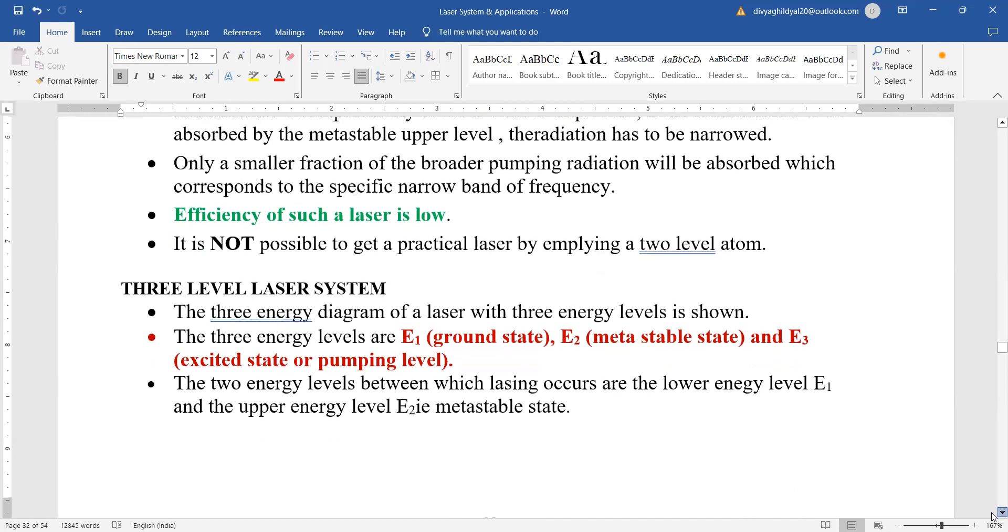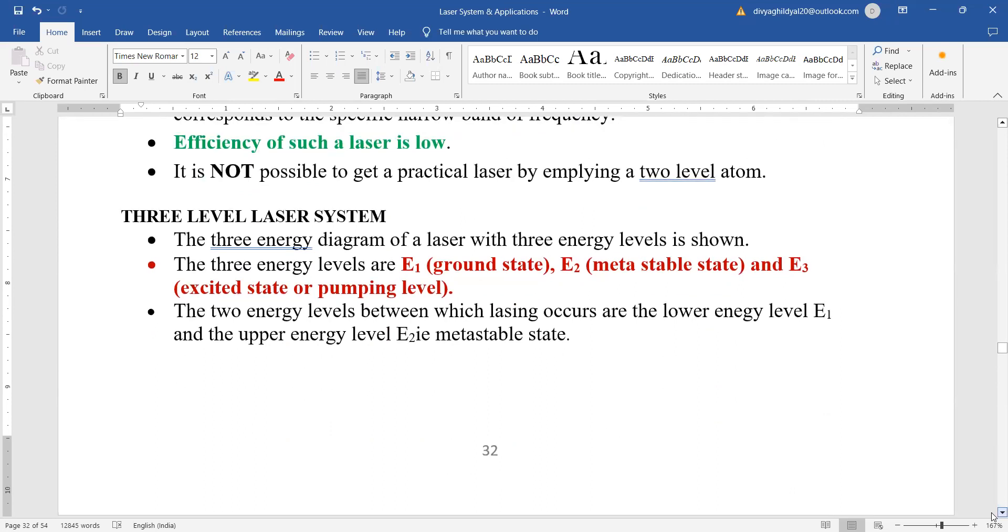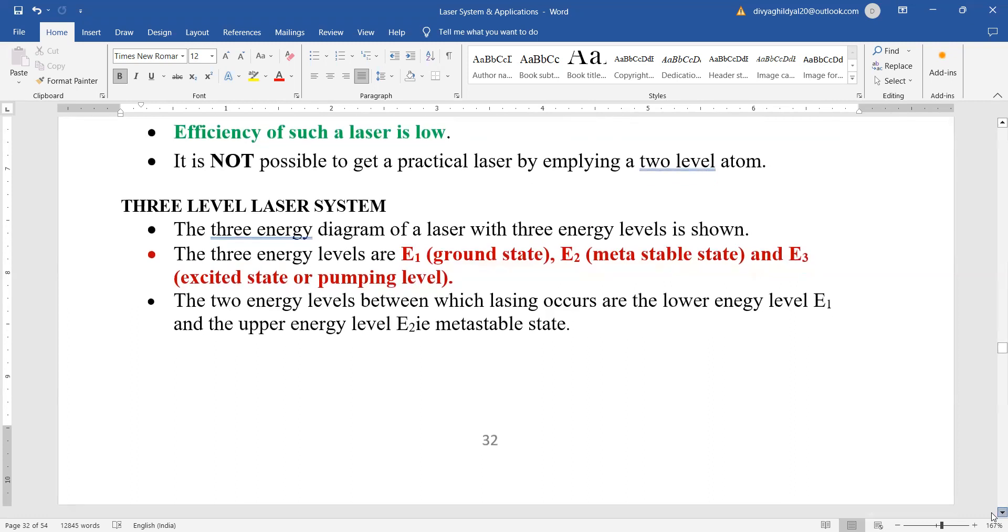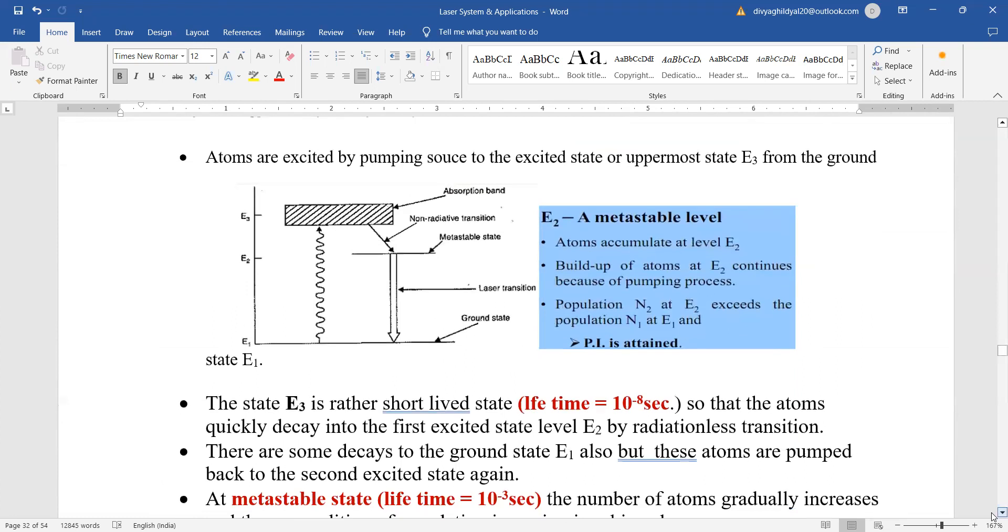Three level laser system. For three level you can remember your ruby laser and answer the questions that the three level energies are ground state, metastable state and excited state or the pumping level. Now what happens is look at this diagram. The ground state, the excited state and the metastable state. This will give us a laser light because transitions coming from metastable state to the ground state will emit laser light.